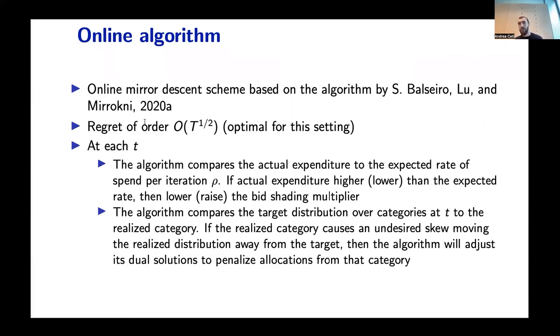In addition to that, the algorithm also compares the target distribution over categories at time t to the realized one. If the target category at time t would cause an undesired skew in the distribution moving away from the target, then such category will be penalized through some adjustments of the dual variables.